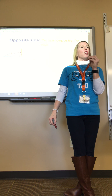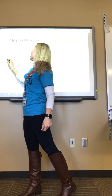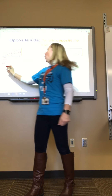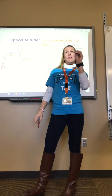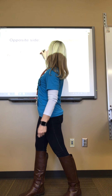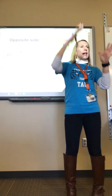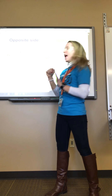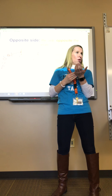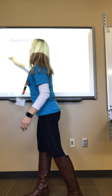In trigonometry, we use a Greek letter to represent angles. Most of the time it's called theta — it looks like a circle with a line through it. You might also see alpha or beta symbols, but we most commonly use theta, spelled T-H-E-T-A. The side directly across from that angle is called the opposite side.